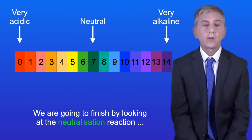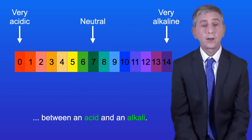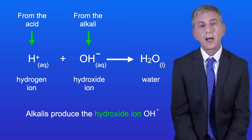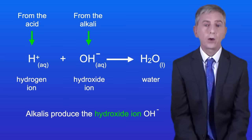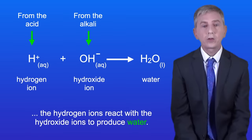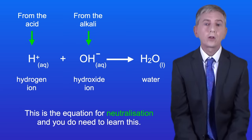We're going to finish by looking at the neutralization reaction between an acid and an alkali. Remember that acids produce the hydrogen ion H+ and alkalis produce the hydroxide ion OH-. When we react an acid with an alkali, the hydrogen ions react with the hydroxide ions to produce water like this. This is the equation for neutralization and you do need to learn this.